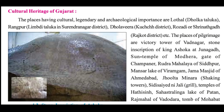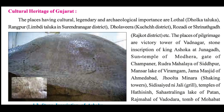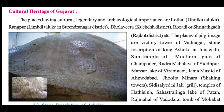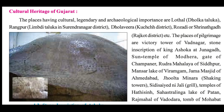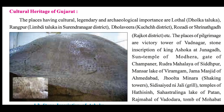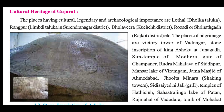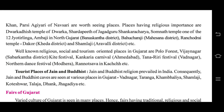Pilgrimage places include the Victory Tower of Vadnagar, the stone inscription of King Ashoka at Junagadh, the Sun Temple of Modhera, Gate of Champaner, Rudra Mahalaya of Sidhpur, Mansarovar Lake of Viramgam, Jama Masjid of Ahmedabad, Jhulta Minaar (Shaking Tower), Sidi Sayyad ni Jali (grill), Temple of Hathi Singh, Sahastralinga Lake of Patan, Raj Mahal of Baroda, Tomb of Mohamed Khan, and Parsi Agiari of Navsari are worth seeing places.